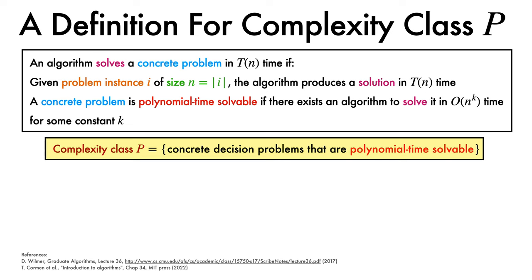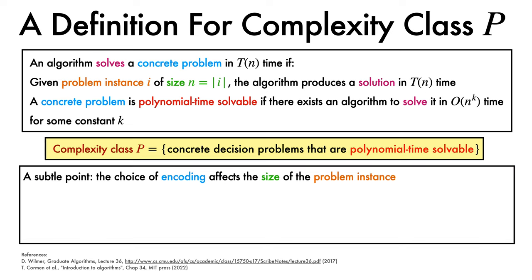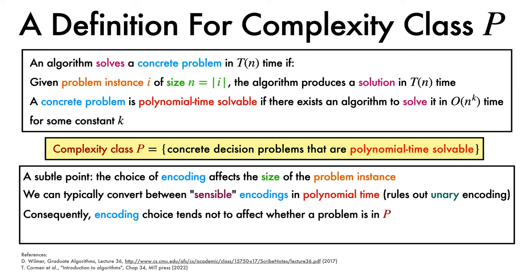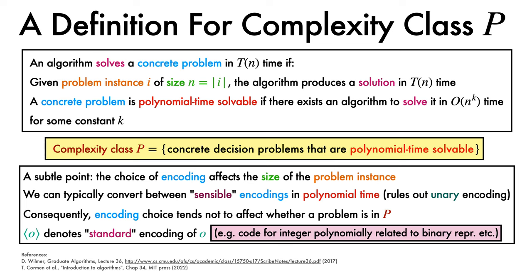One subtlety is that the choice of encoding affects the size of the problem instance. However, we can typically convert between sensible encodings in polynomial time, provided we rule out particularly inefficient schemes like unary encoding. As a consequence, within reason, encoding choice tends not to affect whether a problem lies in P or not. Therefore, rather than identifying an encoding for each problem, we'll use angle brackets around an object O to denote a standard encoding of O — any sensible encoding that produces a code for an integer polynomially related to its binary representation.